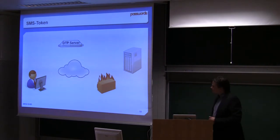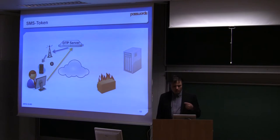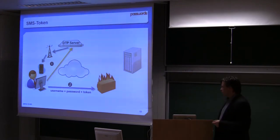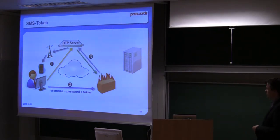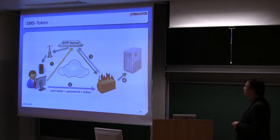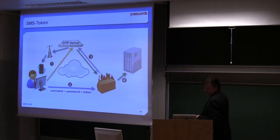You have also some other solutions like SMS tokens. First the guy connects and says okay I'm user A, and you receive an SMS like I did right before to have my key for the Wi-Fi. After I receive my token, I have to send my username and password and my token. The firewall checks if the SMS is the correct one by the OTP server, and if it's OK I can have access to my server or my different services.